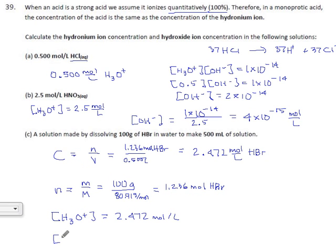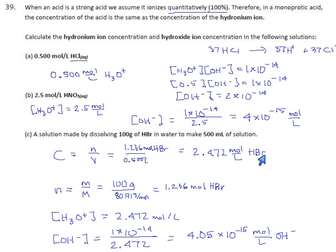So that's our H3O. They also wanted the hydroxide concentration. And you can get hydroxide because it's the ion product for water divided by our H3O, 2.472. And that gives us 4.05 to three significant digits times 10 to the minus 15. That's moles per liter of hydroxide. All of these were top six acids, so all of them have vanishingly small hydroxide concentrations. Makes sense.